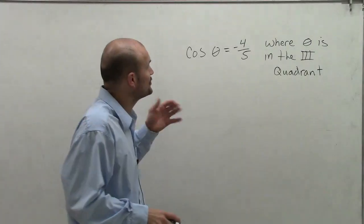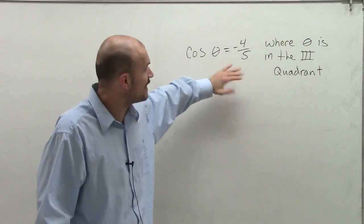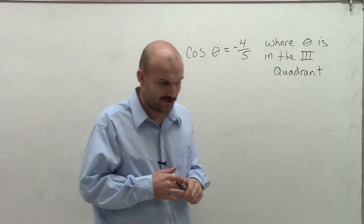Welcome. What I want to do is show you how to evaluate for theta when cosine of theta equals negative 4 over 5, where our theta is in the third quadrant.